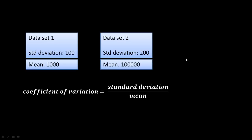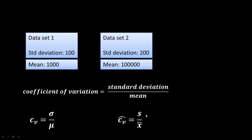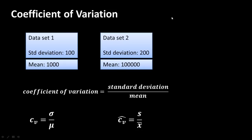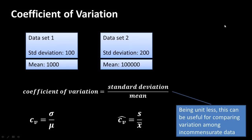Coefficient of variation is useful for measuring dissimilar or incommensurate figures. The formula is σ/μ for the population, where σ is the population standard deviation and μ is the population mean. For samples, the coefficient of variation is denoted CV-hat and the formula is s divided by x-bar, where s is the sample standard deviation and x-bar is the sample mean. Being unitless, coefficient of variation is especially useful for comparison.